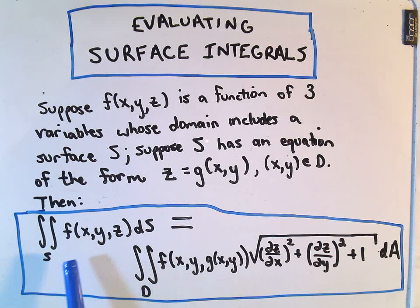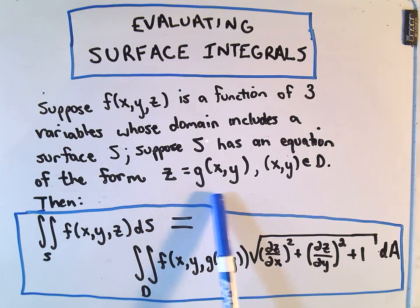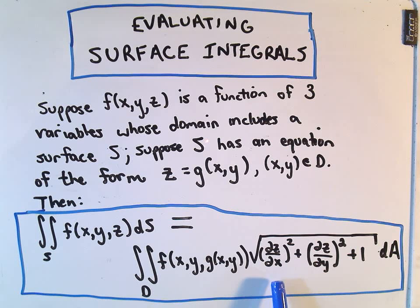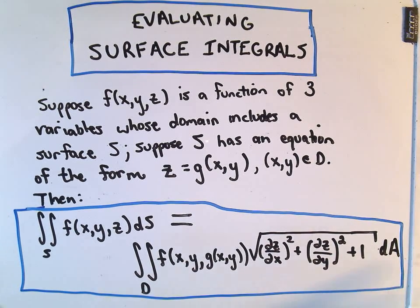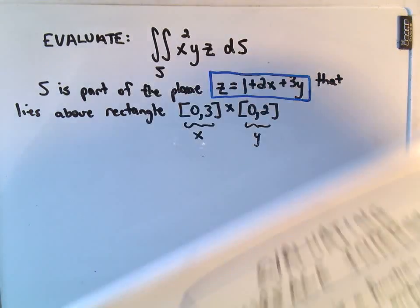If you want to integrate your function of three variables over that surface, basically what you do is leave the x and y alone, substitute z with the function g(x,y), and then multiply all of that by the square root of (∂z/∂x)² + (∂z/∂y)² + 1. Then we can integrate with respect to x or y first, it doesn't really matter.